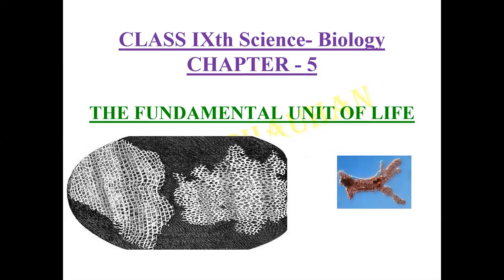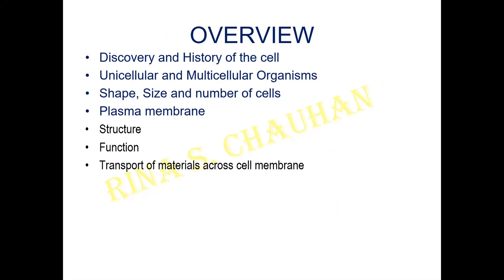We'll be studying: the discovery and history of the cell, the comparative study of unicellular and multicellular organisms, and the shape, size and number of cells. We'll see if we can start with the plasma membrane — that is one part of the cell — or just an overview of the cell, and probably the structure and function of the plasma membrane we can do in the next class.